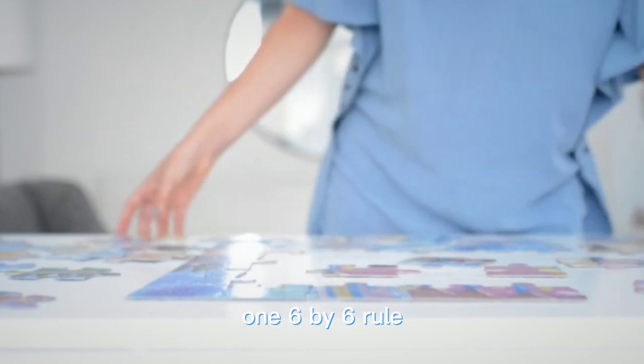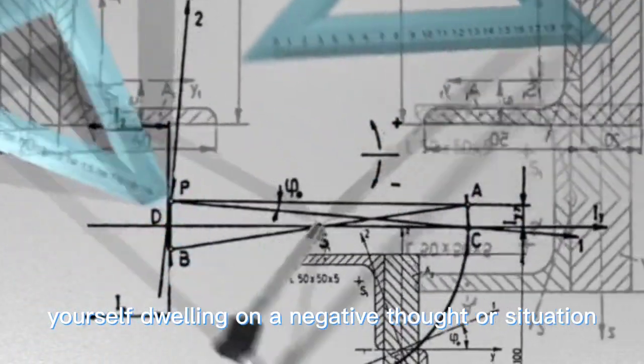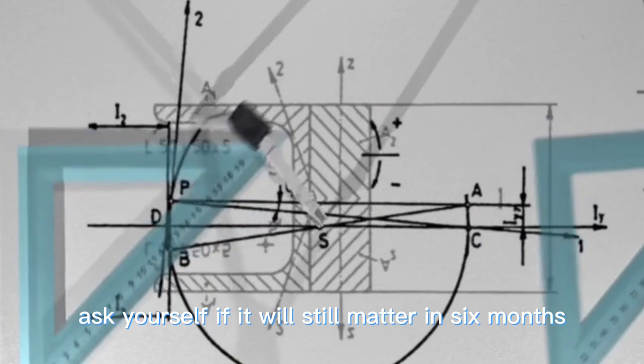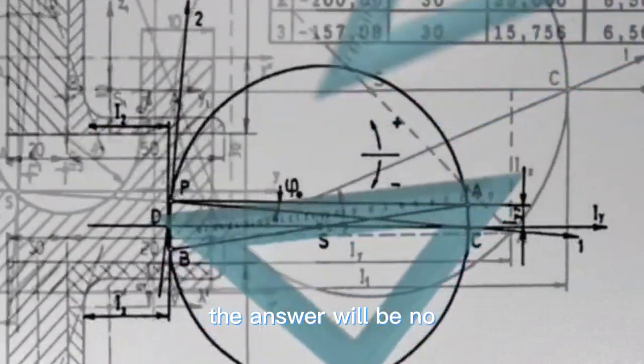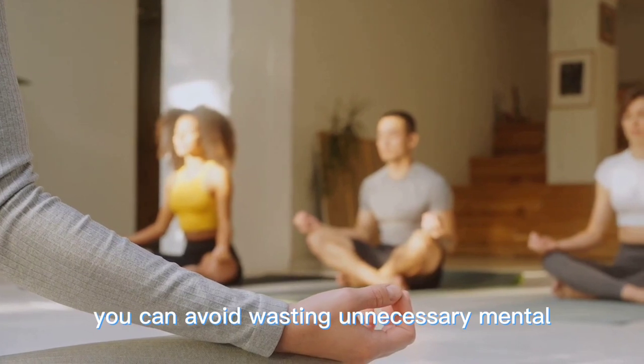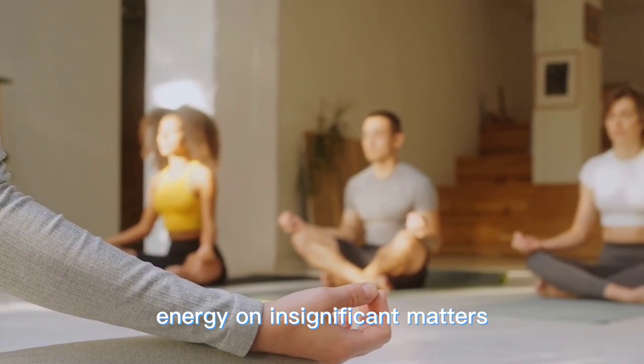Six-by-six rule. Whenever you find yourself dwelling on a negative thought or situation, ask yourself if it will still matter in six months. Most of the time, the answer will be no. By using this rule, you can avoid wasting unnecessary mental energy on insignificant matters.